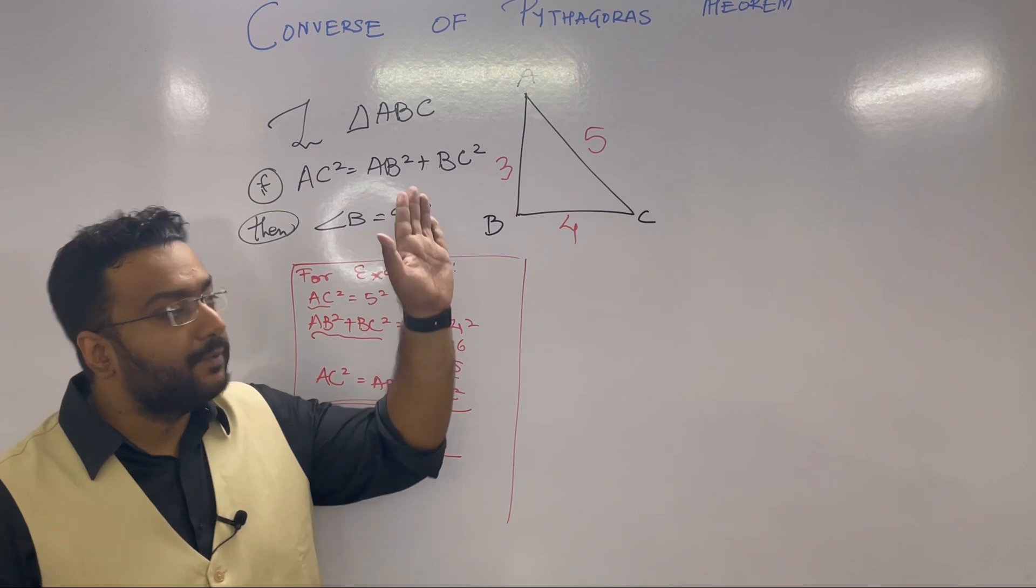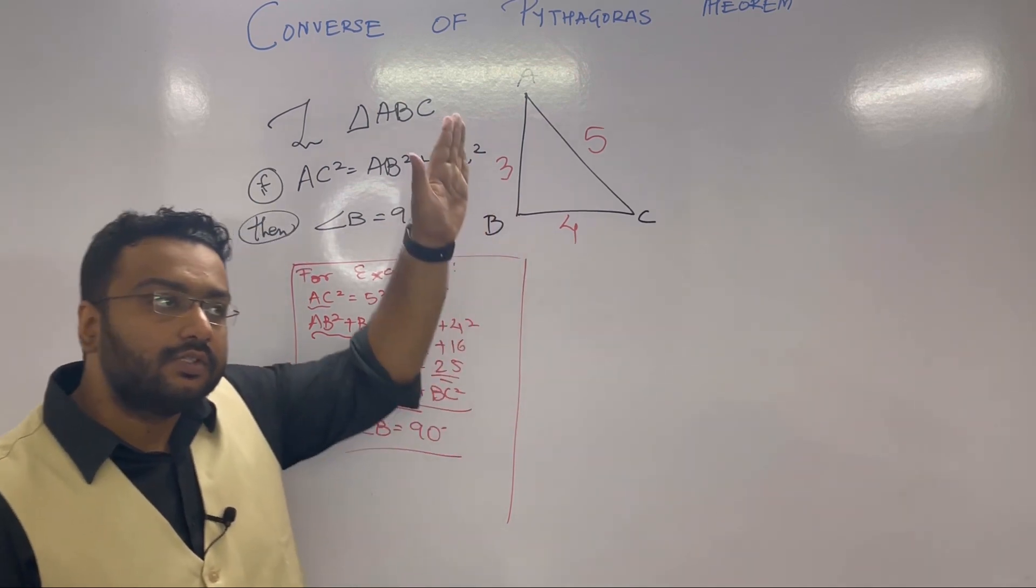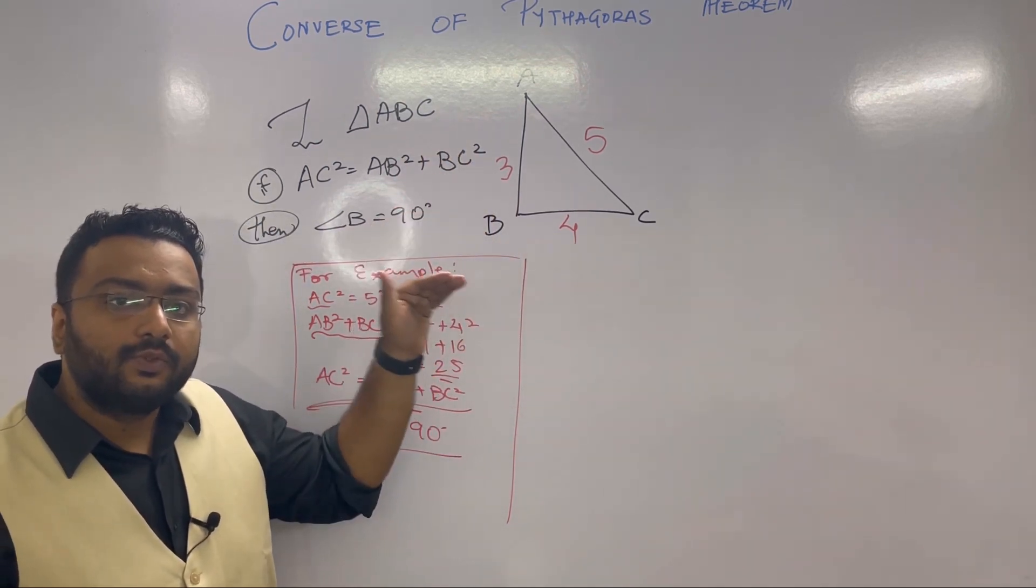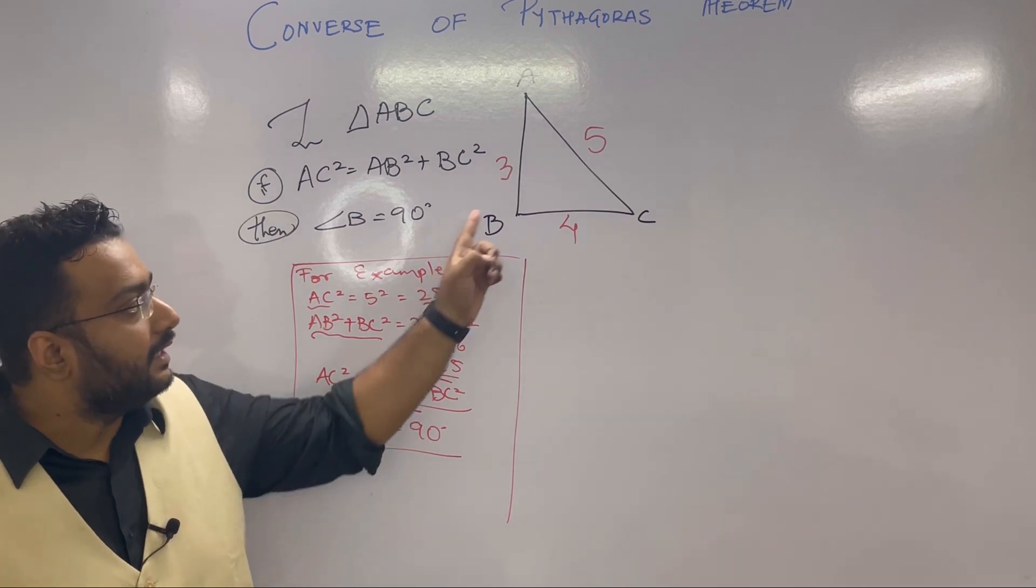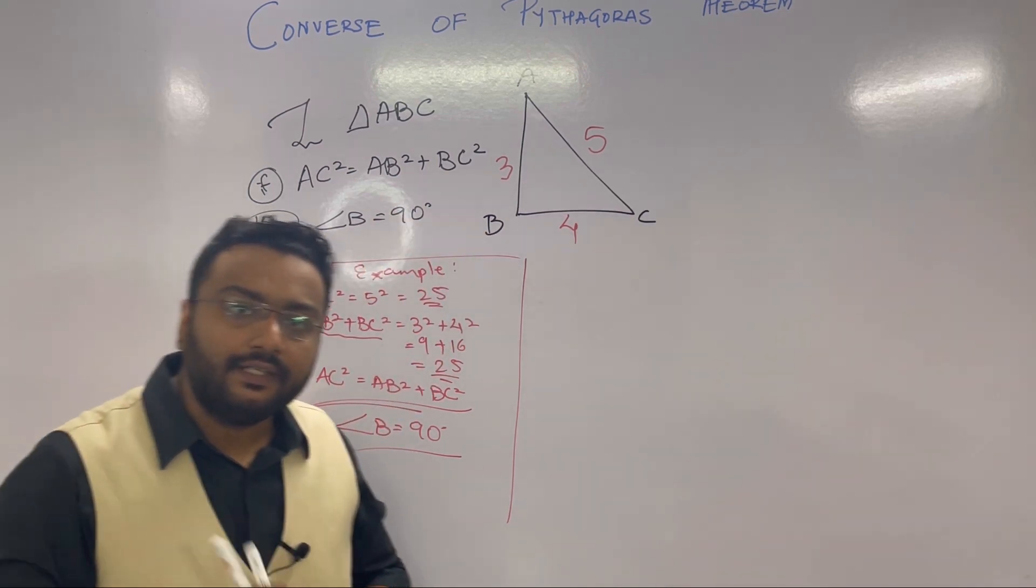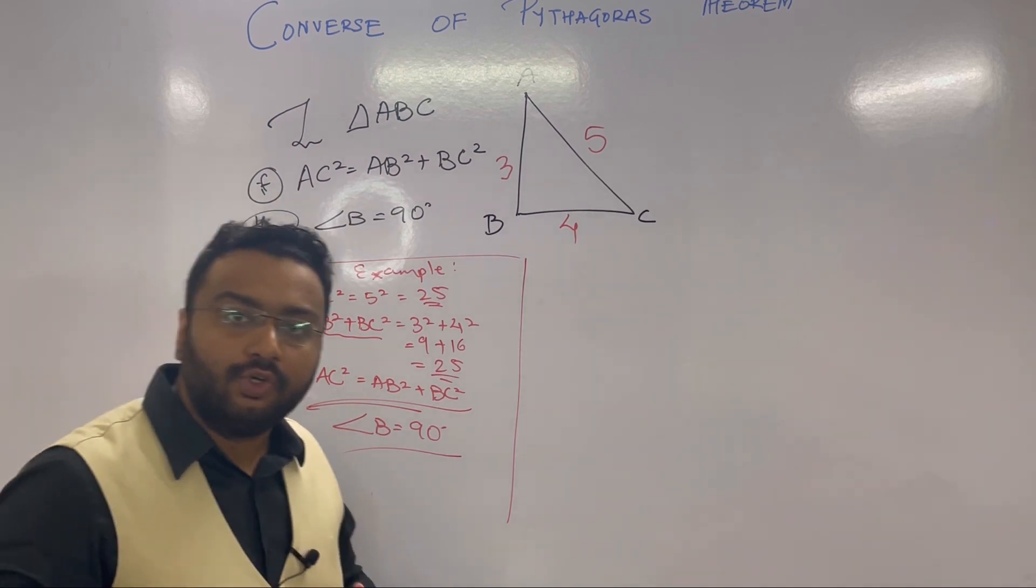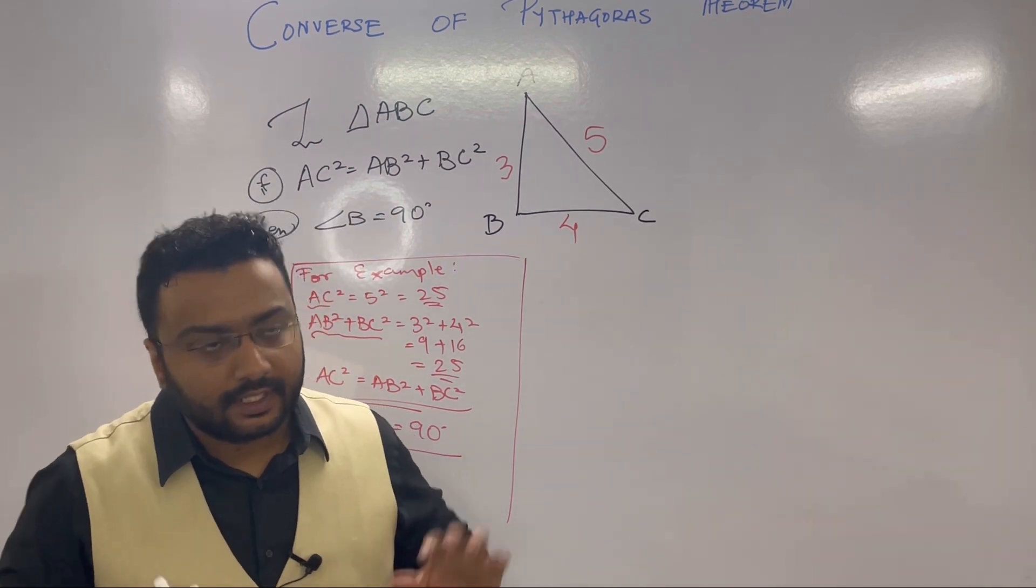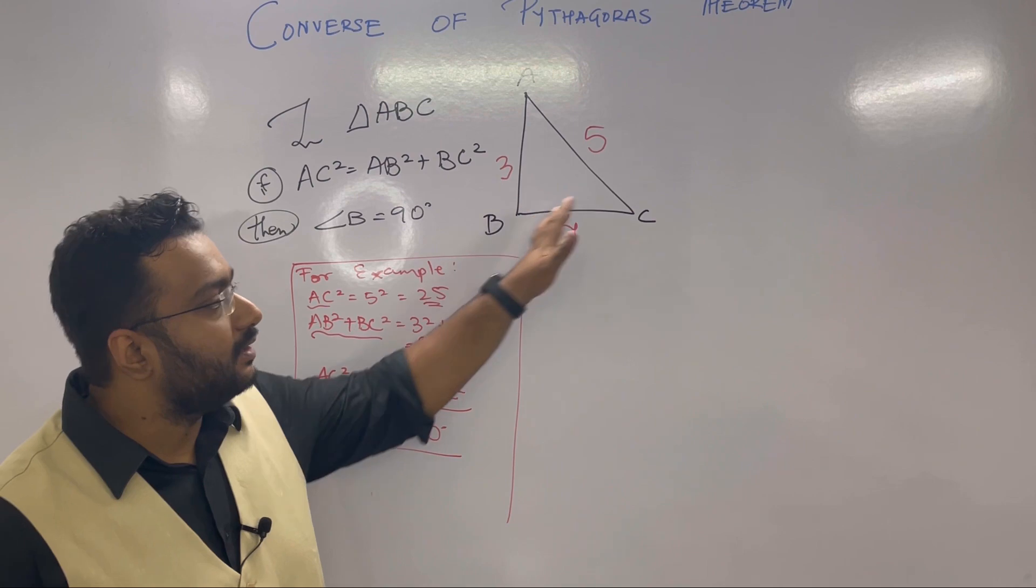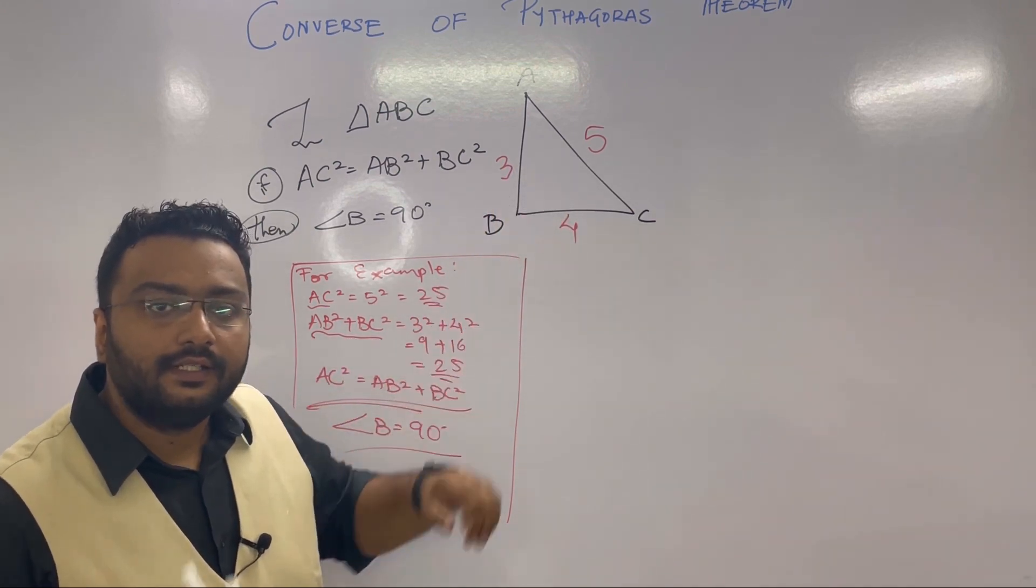So whenever hypotenuse square equals the sum of side one square plus side two square, we say that angle is 90 degrees. Now you might think, how do we know which angle is 90 degrees? We all know that the longest side is the hypotenuse. So in these three numbers, always consider the greatest number to be the hypotenuse, and the angle opposite to it will be 90 degrees.